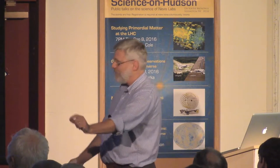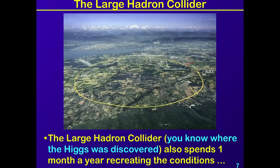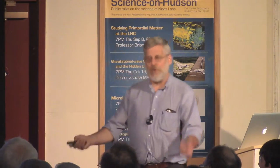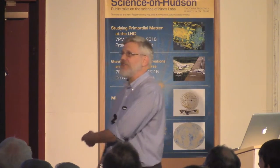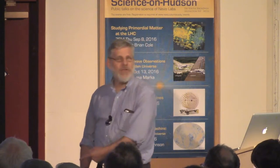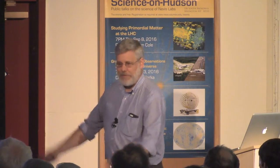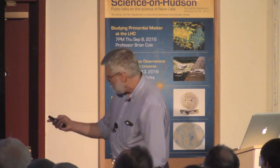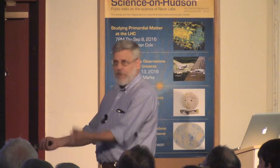This same work is now being done at the Large Hadron Collider, where the Higgs was discovered. The LHC's program was designed from the beginning to spend one month a year recreating the conditions of the early universe by colliding nuclei — not a hundred thousand times a second, but more like a million times a second. We're still peanuts compared to the proton-proton collisions at 40 million times a second, but a million is pretty good. The rest of my talk is about why we do this and what we're learning from it.